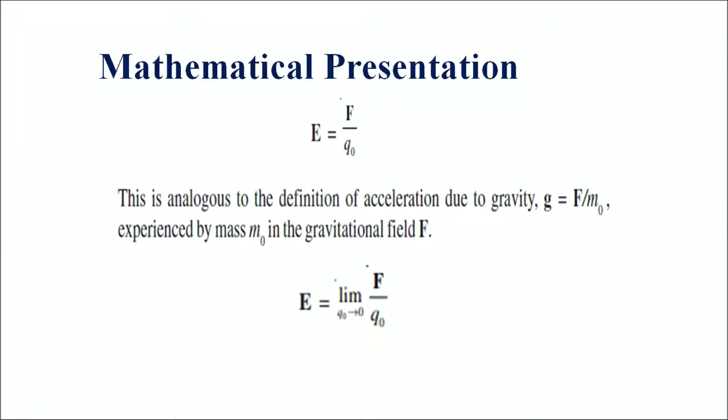This equation is analogous to the definition of acceleration due to gravity: g is equal to F upon M naught, where M naught is the mass in the gravitational field F.